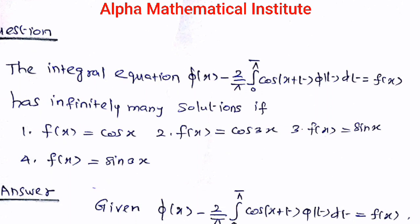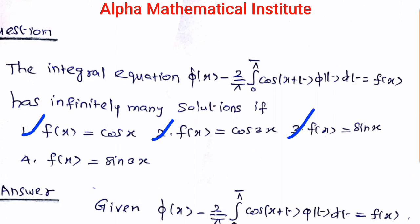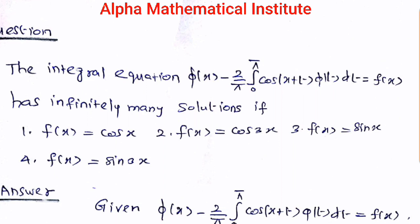Here is the question. The integral equation phi(x) minus (2/π) times the integral from 0 to π of cos(x+t) times phi(t) dt equals f(x) has infinitely many solutions. The options are: f(x) = cos x, f(x) = cos 3x, f(x) = sin x, and f(x) = sin 3x. We have to determine for what values of f(x) this integral equation will have infinitely many solutions.